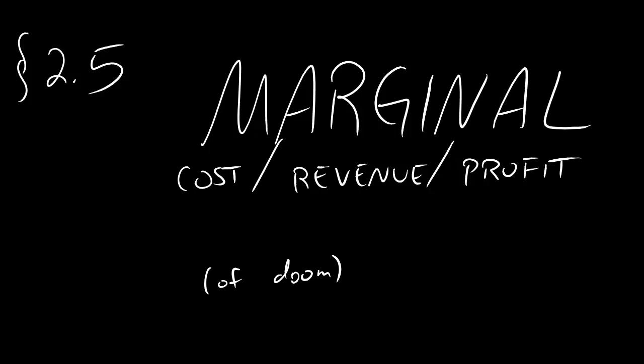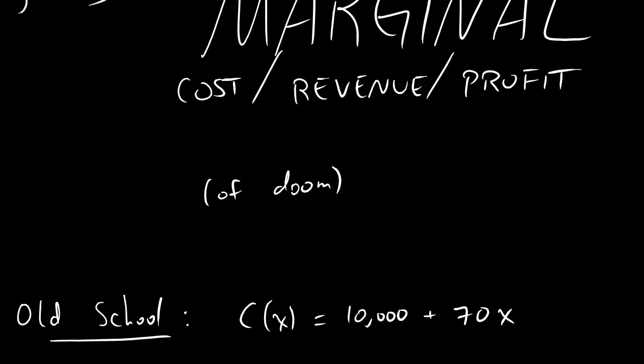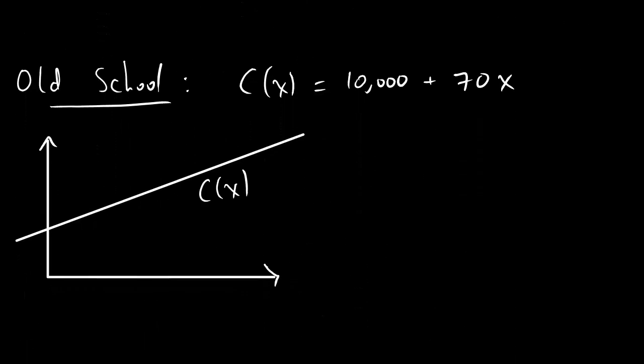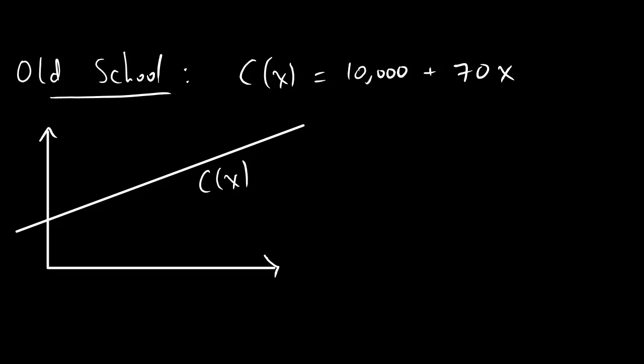You've seen these words thrown around before, but let's talk about what they mean and what you're going to be asked to do. Here's the old school thing. Way back in the day when the world was young and we were all innocent and naive, we would see a cost function that looked something like 10,000 plus 70x. You can see a handy-dandy little graph of this line, and the interpretation would be that the more items that we make, then the more money we have to spend in order to get those items made so that we can go on and sell them or whatever.